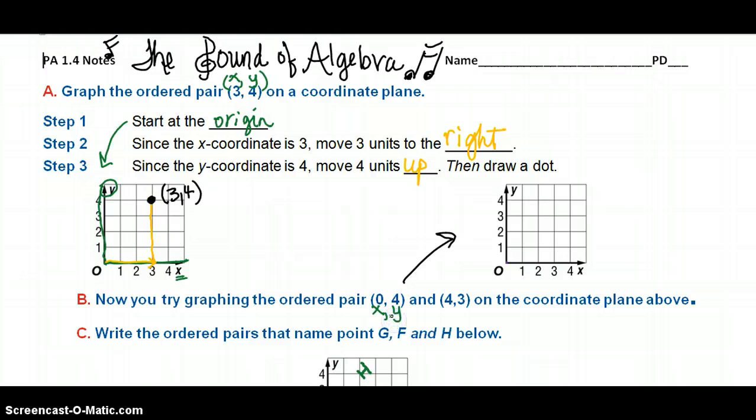Again, 0 is our x, 4 is our y. So for 0, I start at the origin and I do not travel at all on the x-axis because I traveled 0. So I'm only going to be traveling up 4 units, so there is the point 0, 4. Now to plot 4, 3, 4 is my x so I'll move over 4, and 3 is my y, I'll move up 3, and here is the point 4, 3.